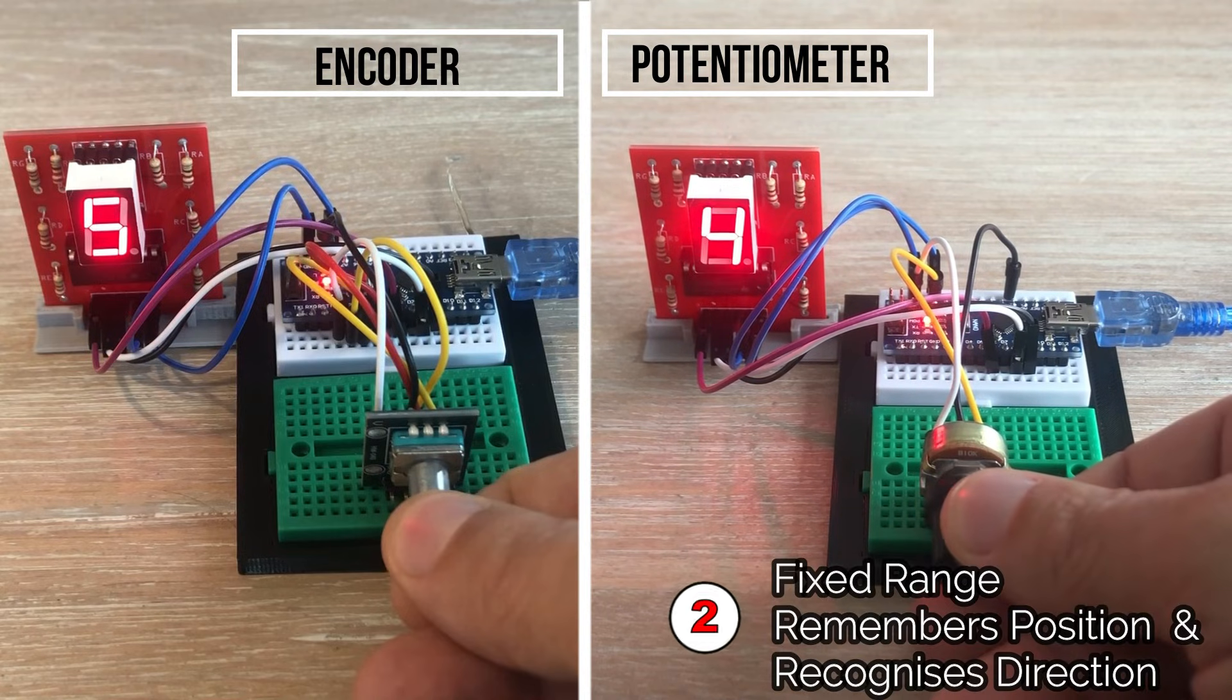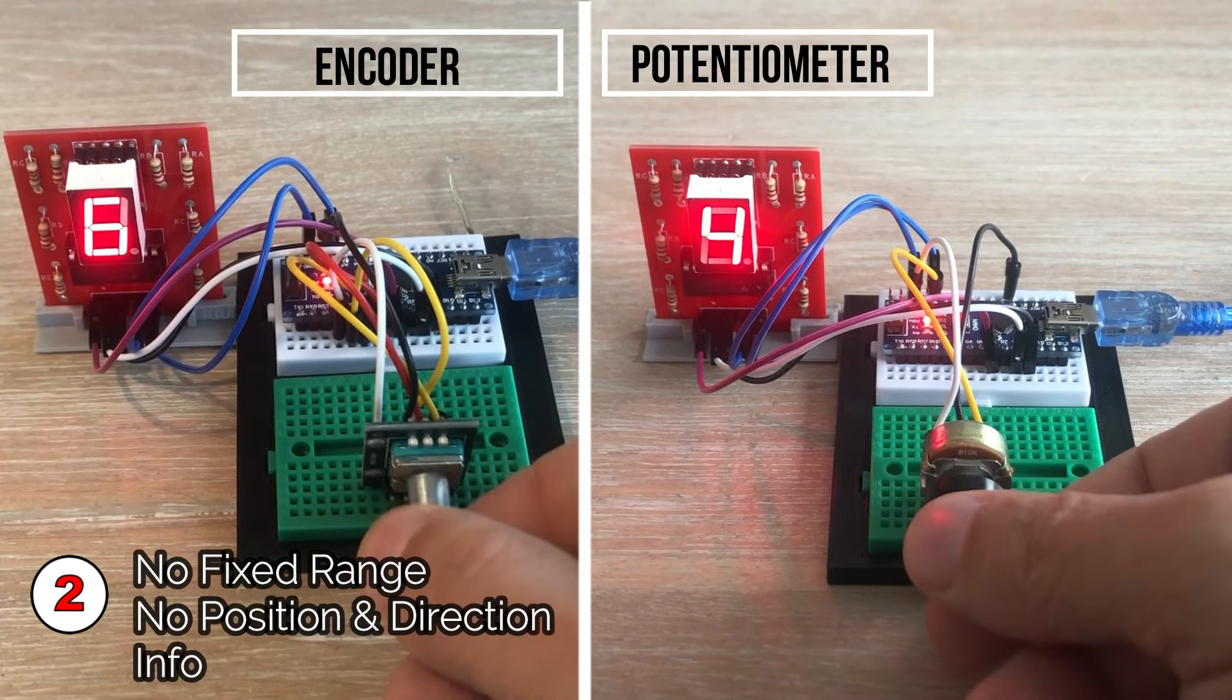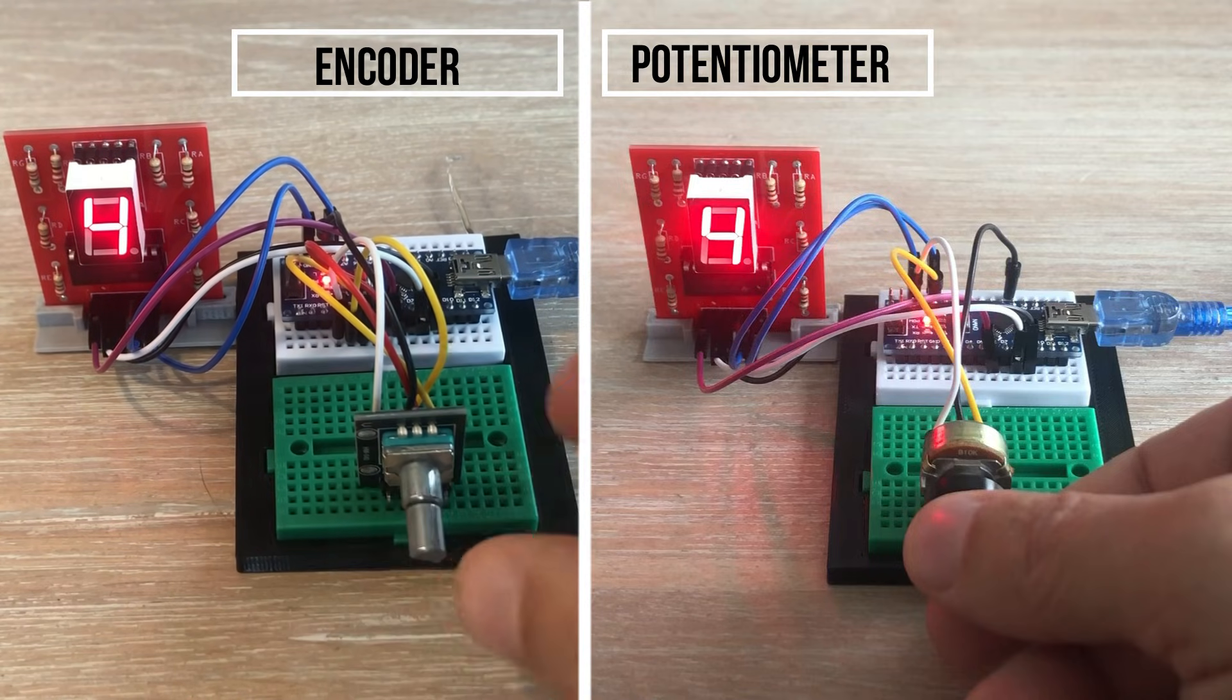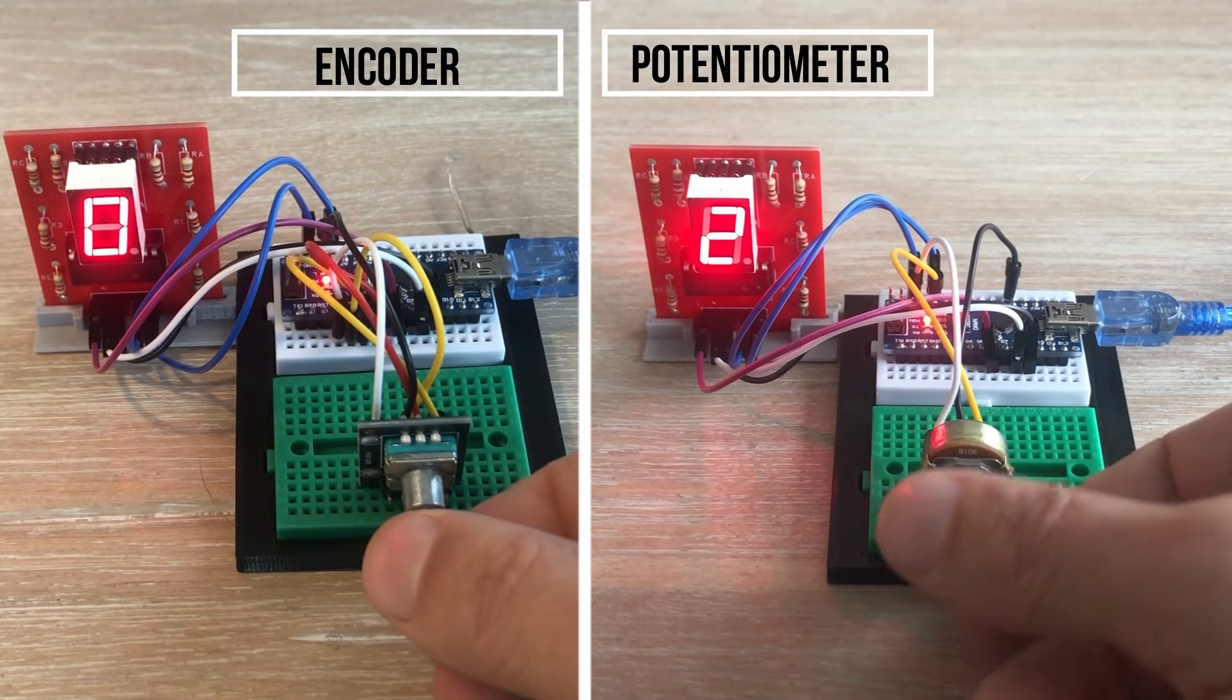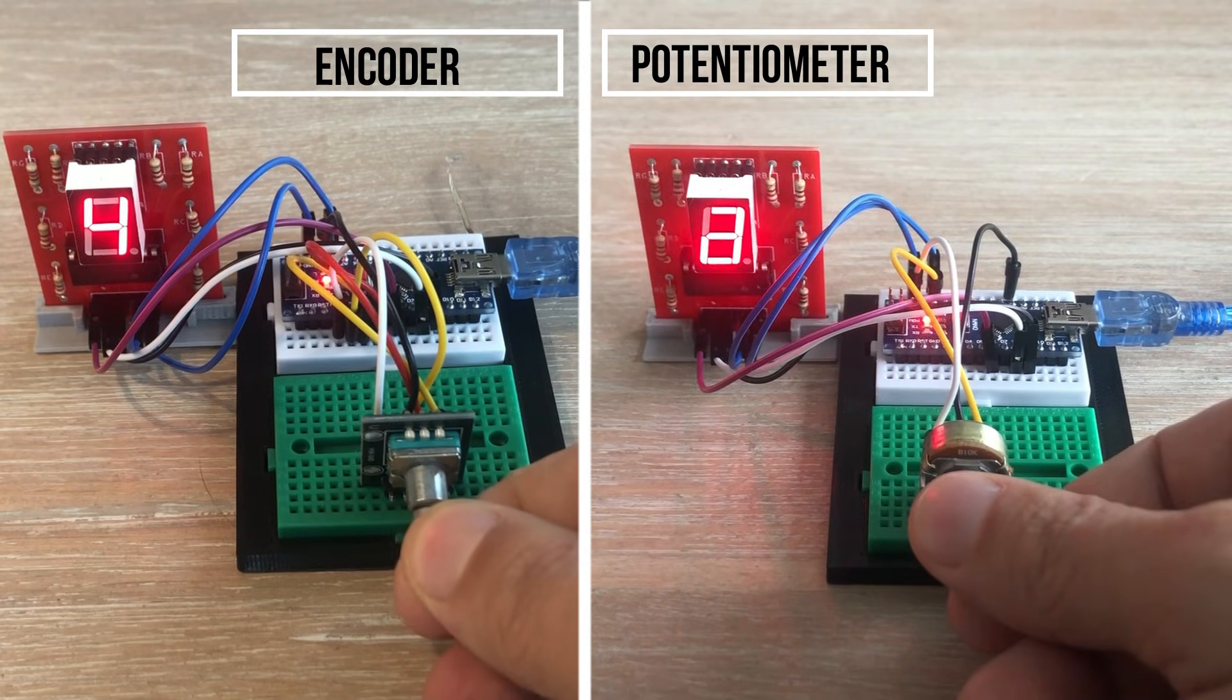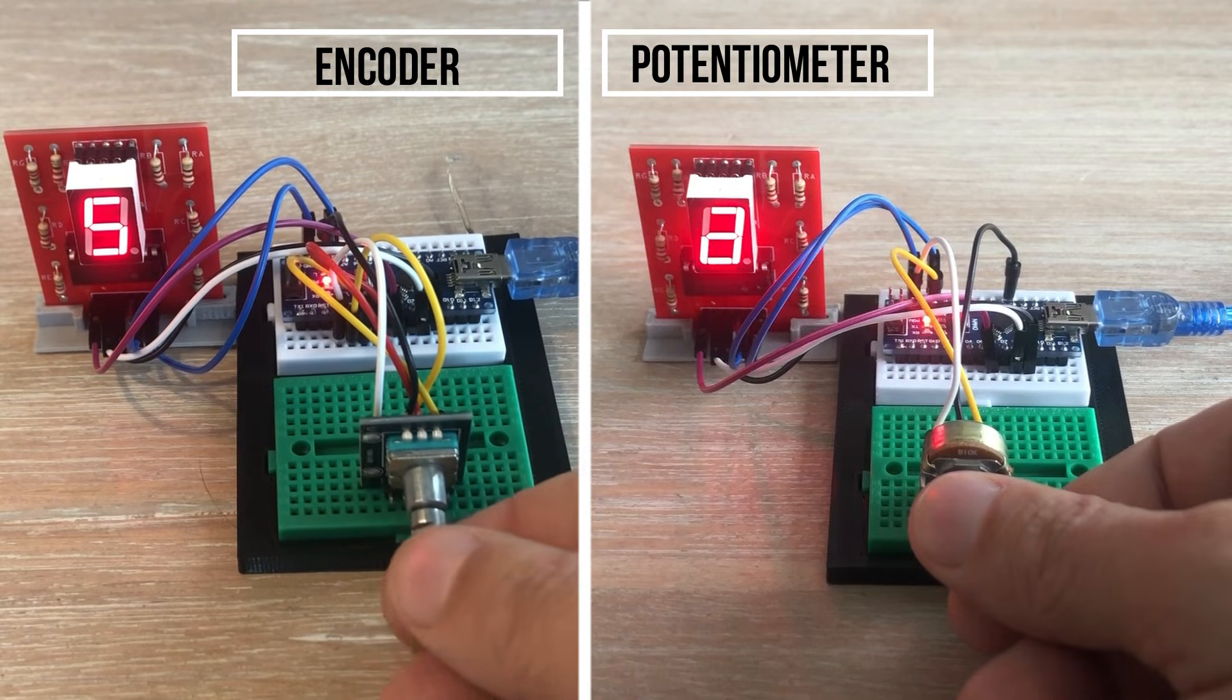Potentiometer has a fixed range and remembers the current position within that range. It also recognizes the direction in which the shaft is turning. Encoder does not have a fixed range and moving within the range and remembering the position and recognizing in which direction the shaft is rotating has to be programmed in the Arduino sketch. Thus potentiometers are used in situations where you need to know the exact position of the shaft whereas rotary encoders are used in situations where you need to know the change in position rather than the exact position.